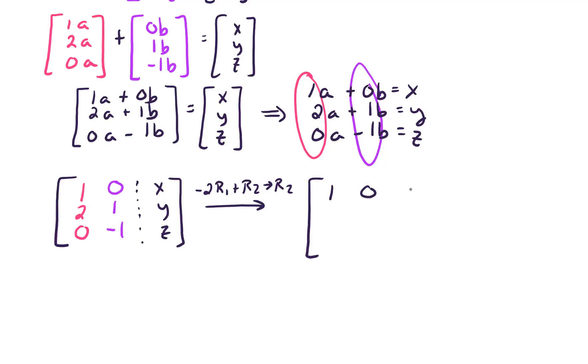Top row is unchanged. For the second row, if I'm multiplying by negative 2 here, I'm going to get 0, 0, and now careful, we get negative 2x plus y. And the bottom row, bottom row is unchanged.